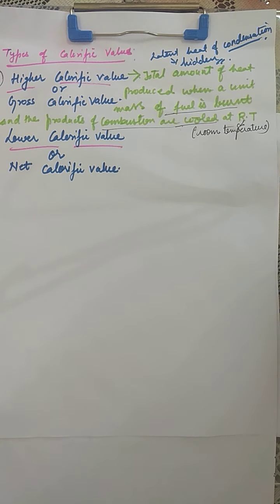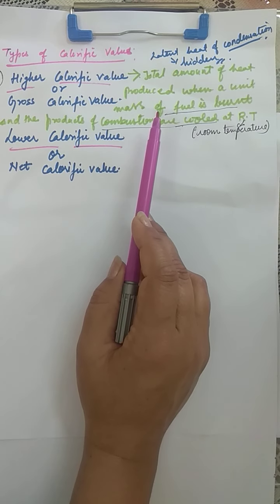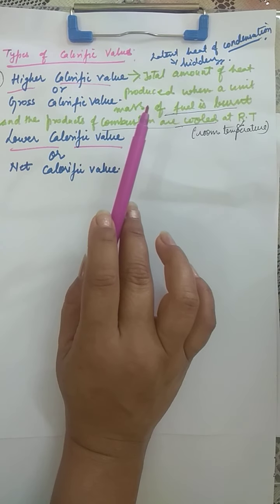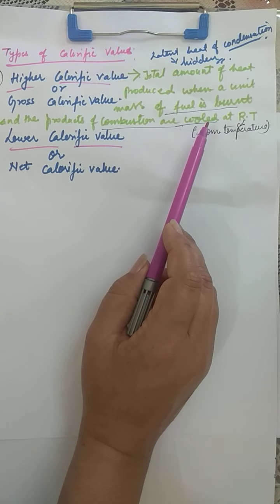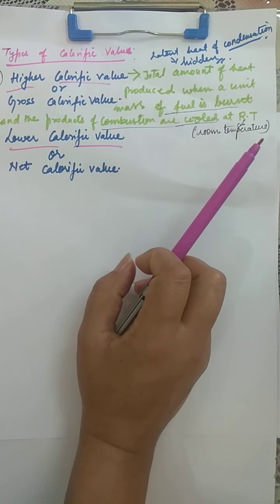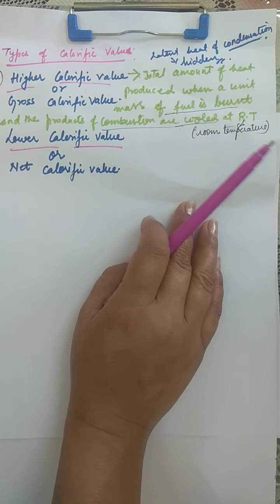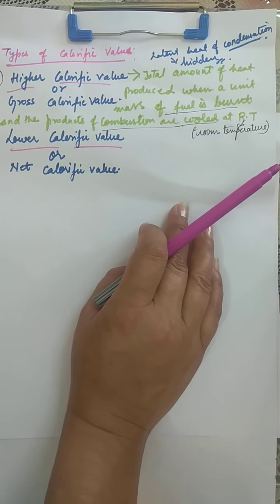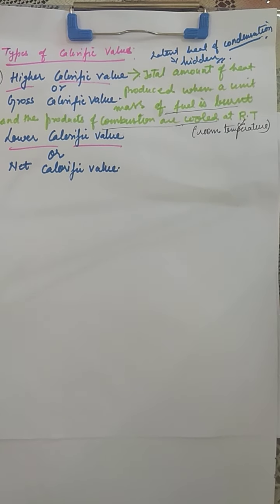Next we have lower calorific value, or net calorific value. What is net calorific value? It is only the net heat produced when a unit mass of fuel is burned. No latent heat of condensation is added to it. The vapors are let to escape from the apparatus in which the fuel is burned.